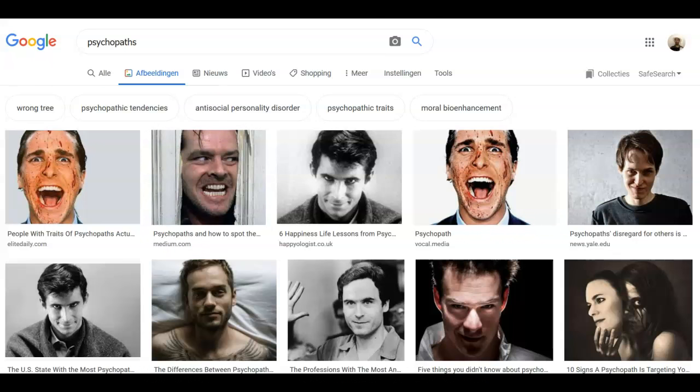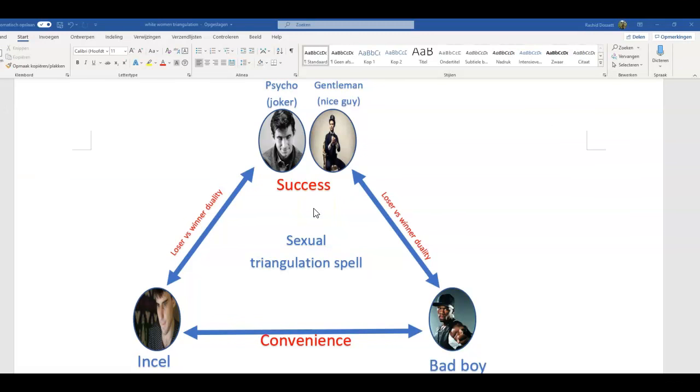Let me open Word and I'll show it to you. What you see here is what I've made in Word to explain this to you. This is the sexual triangulation spell or the collective voodoo that's done on Caucasian and East Asian women. For this spell to work, you need constant exposure to stereotypes and projected images. Here you see a triangle with four images.